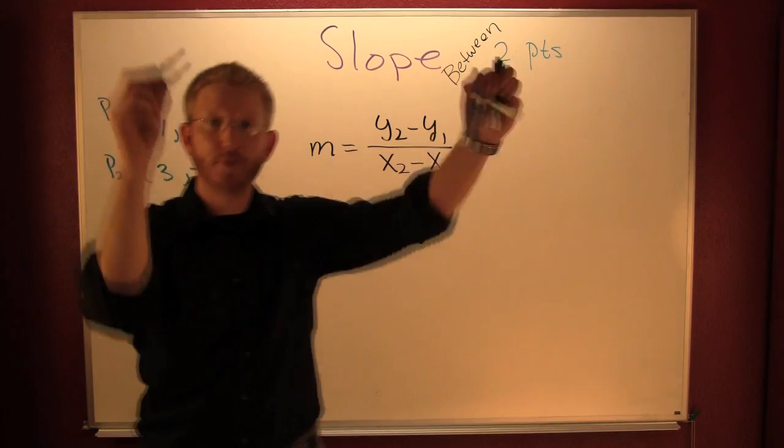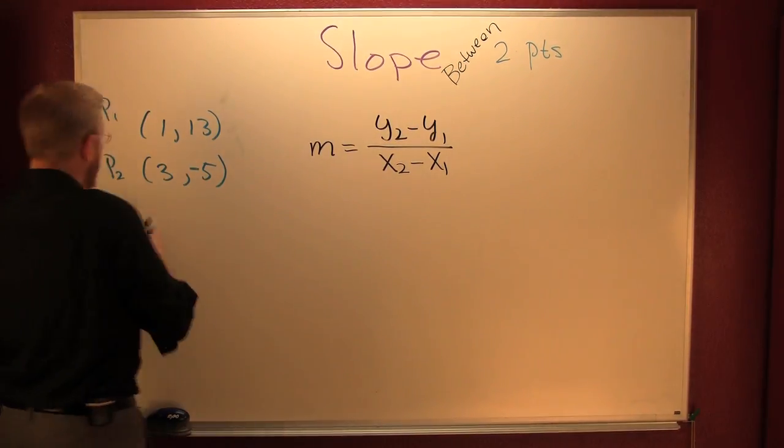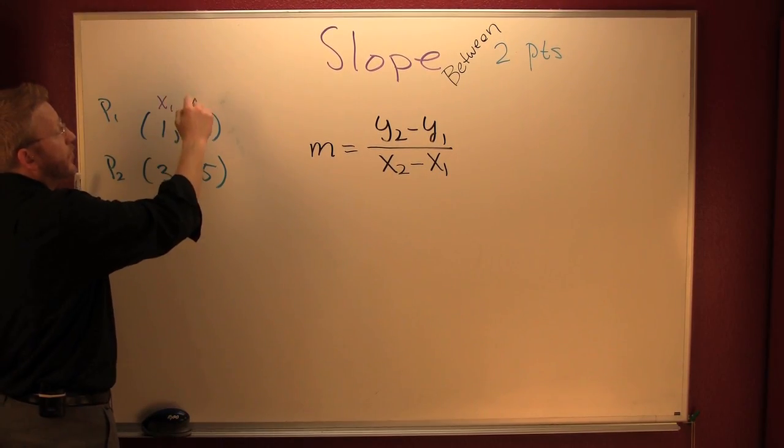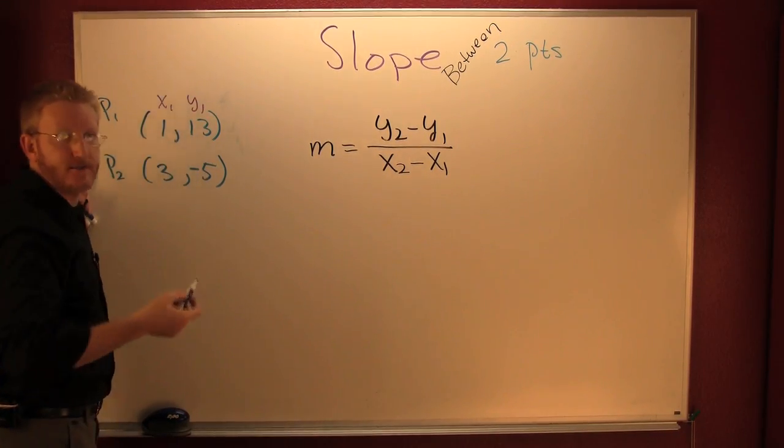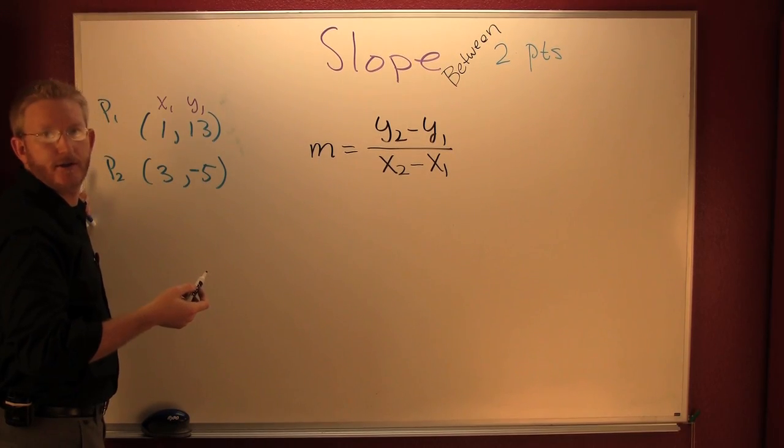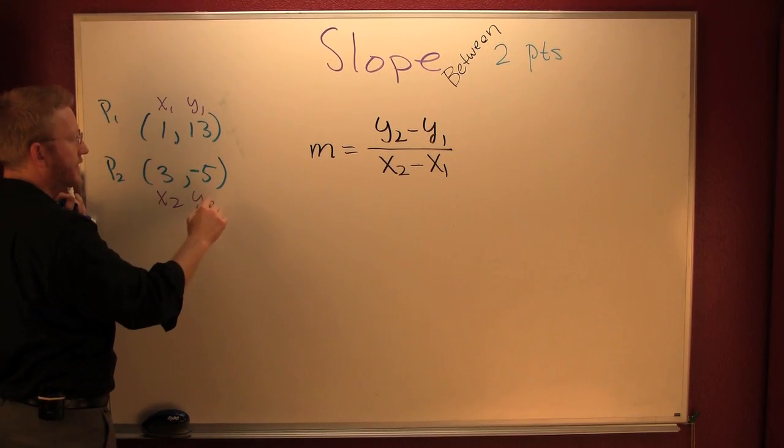Until you're a professional, I strongly encourage that you label your points. Being that this is my first point, I'm going to say that this is X1, Y1. Why? Because my points are ordered pairs and they go in that order, X first then Y. This is X2, Y2.